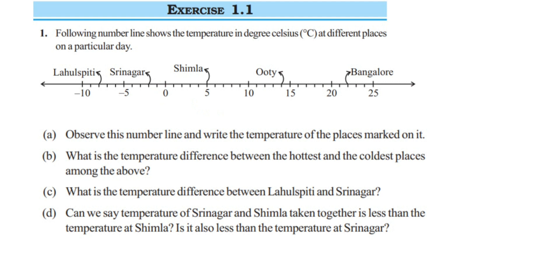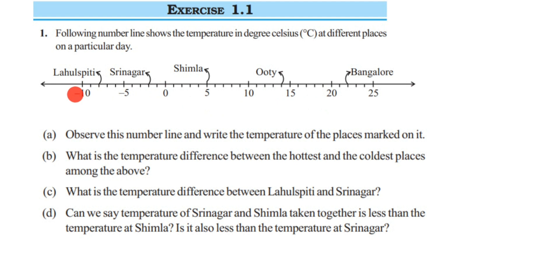You might have learned about a number line in your lower classes, around 4th or 5th. On the right side of zero there are always positive numbers, and on the left side of zero there are always negative numbers. Now let's mark the temperatures on the number line.